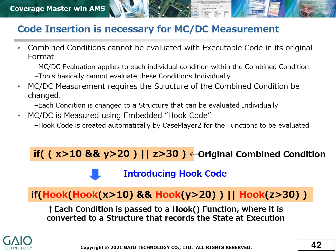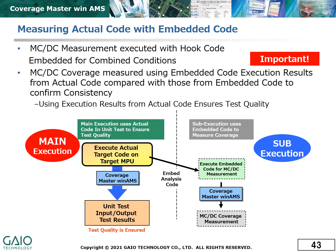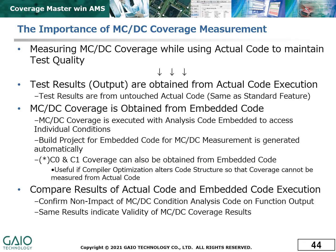Measuring MCDC coverage requires that each individual condition in a combined condition be evaluated. This cannot be done without adding what is called hook code to evaluate and record the condition state at the time of execution. Thus, the MCDC coverage measurement is carried out using a target program with hook code embedded. The same tests are also performed on the target program without hook code, this time not measuring coverage. The purpose of the second test is to provide a set of test results for the same tests using the unmodified code to confirm that the same results are obtained by both programs, proving that the addition of the hook code did not modify the behavior of the program.